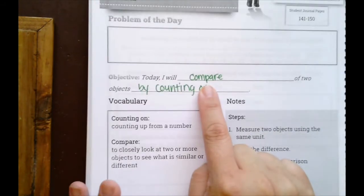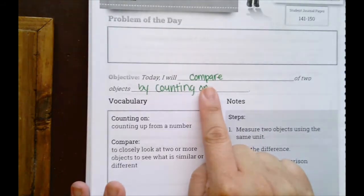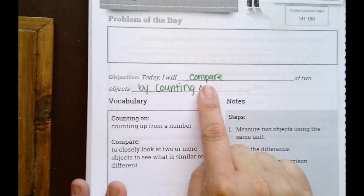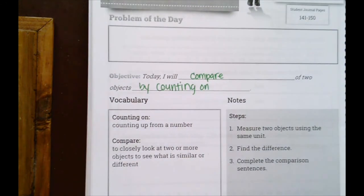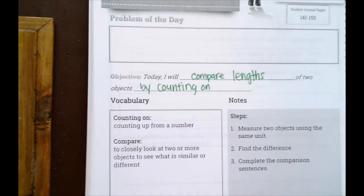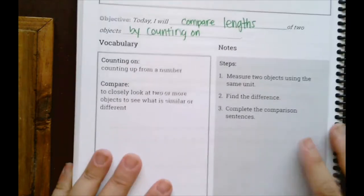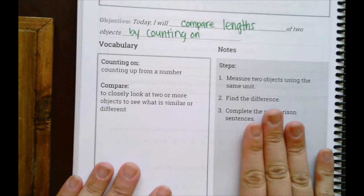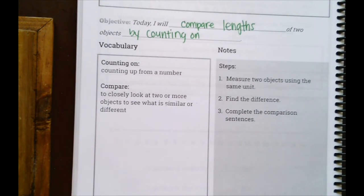So Lesson 12 — the objective is the same: I will compare lengths of two objects by counting on. The steps are a little bit different because this time you have to actually measure the object. This requires you to either have a ruler or a yardstick, something that you can measure with.